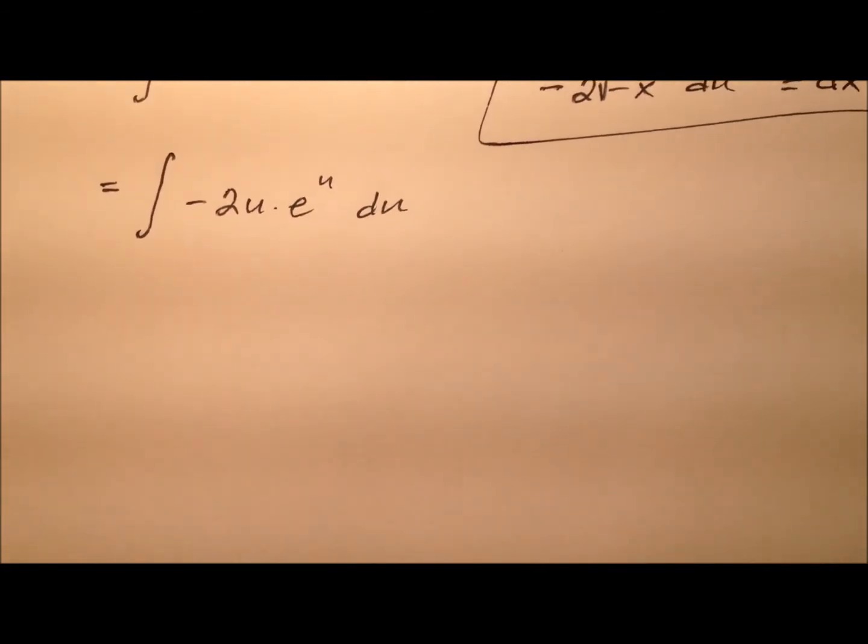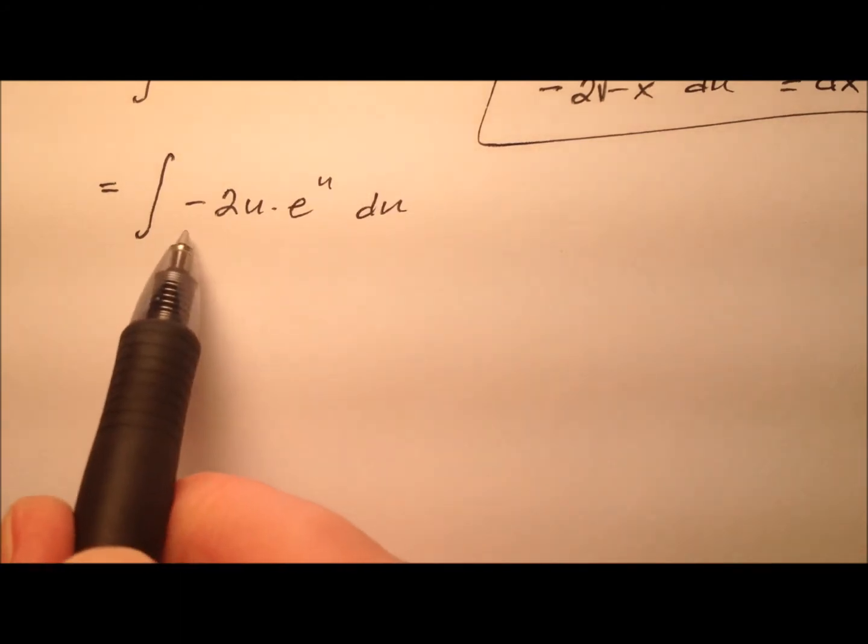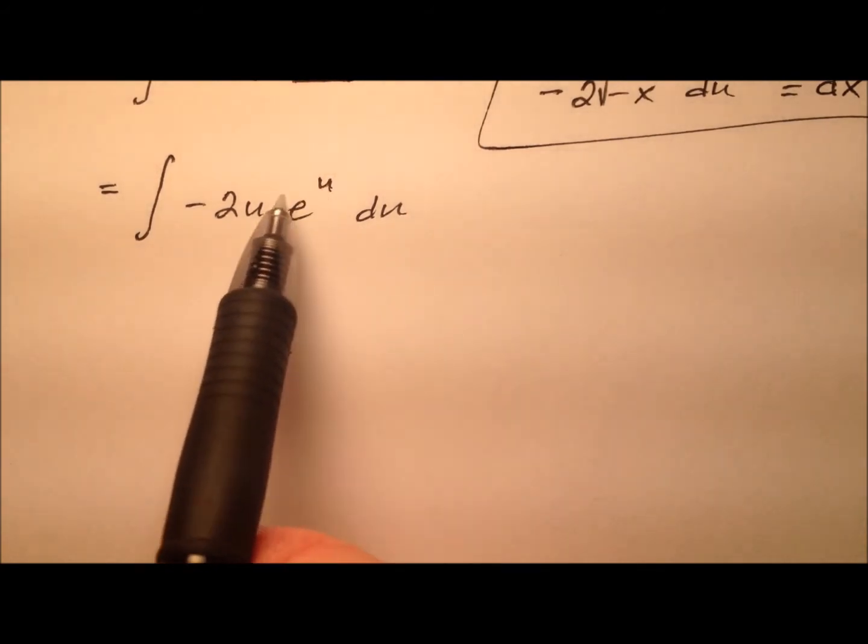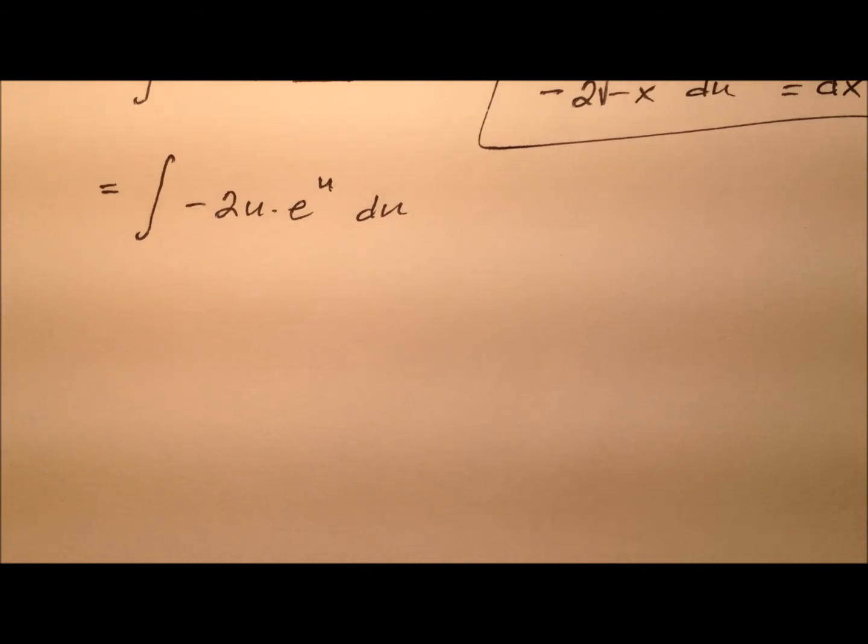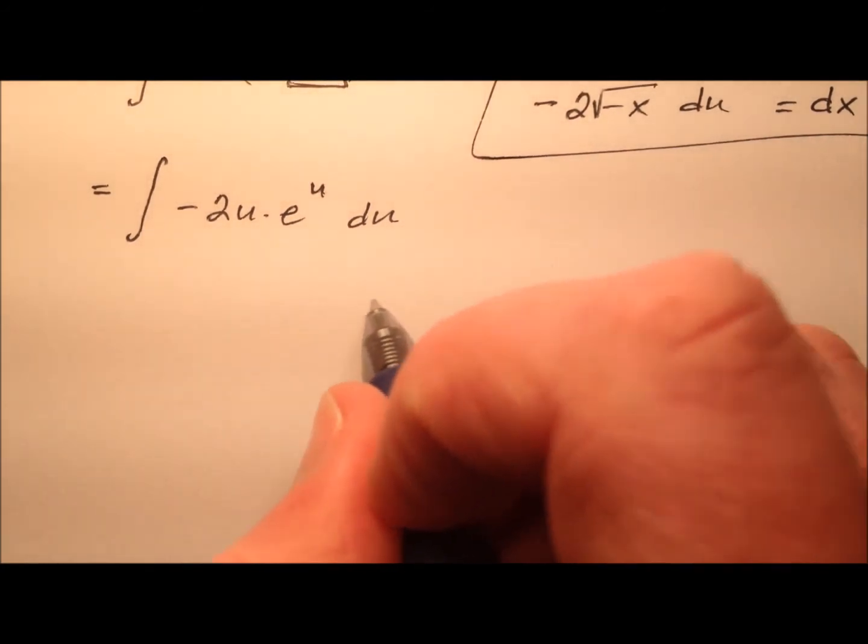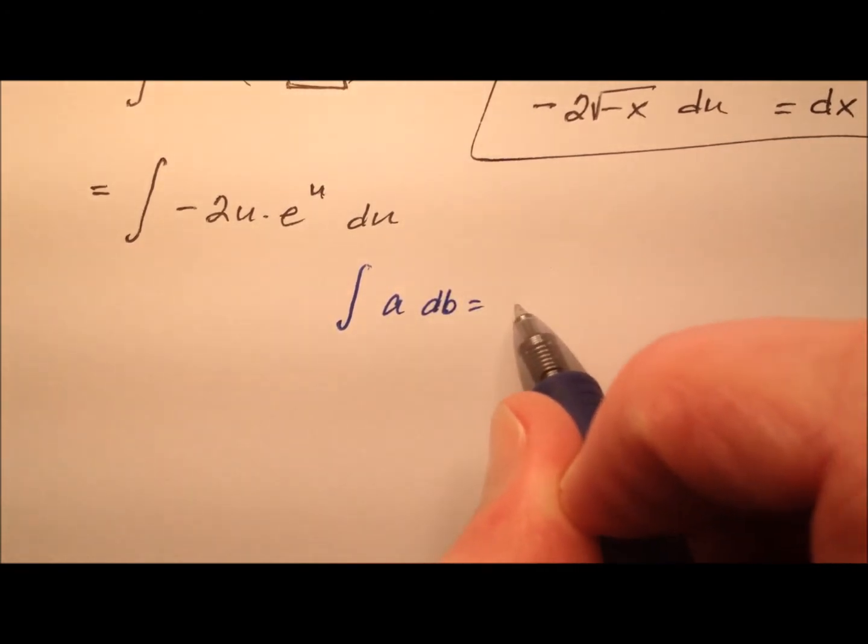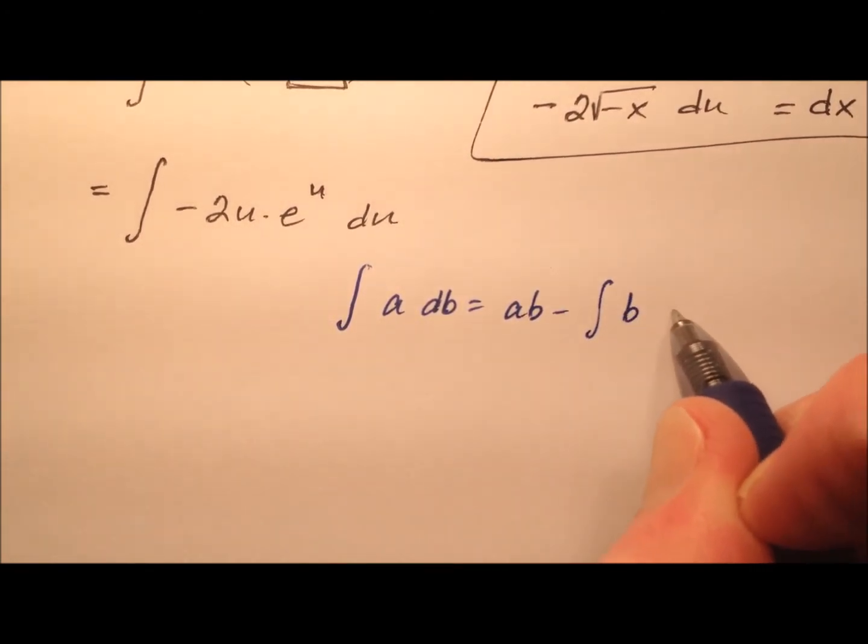Alright, so that's good stuff. Now, it looks like in order to integrate this with it being in terms of u now, it'll be a good candidate for integration by parts. And that formula typically uses u and v for its variables, but we already have u in use. So let's go ahead and maybe use a and b instead. So let me grab a different color pen and write that integration by parts formula. So it'll be the integral of a db and that'll be ab minus the integral of b da. So we kind of just do a little switcheroo there.